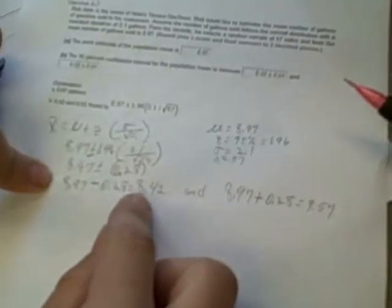We have to add—I mean, mu minus this first value—that gives us 8.42.